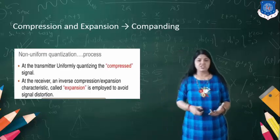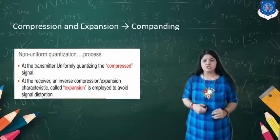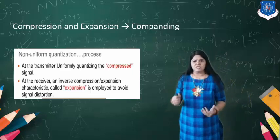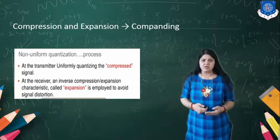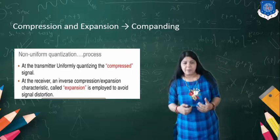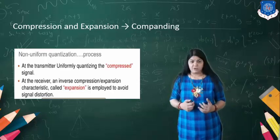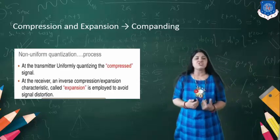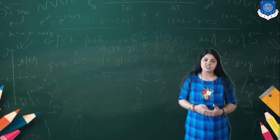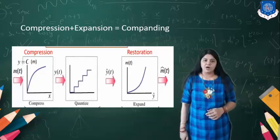We have seen the quantization process — quantization levels can be uniform, where the step size is equal, or non-uniform, where the step size is not equal. In non-uniform quantization, the transmitter uniformly quantizes the compressed signal. At the receiver, the inverse process, known as expansion, is employed to avoid signal distortion. Compression plus expansion is referred to as companding.